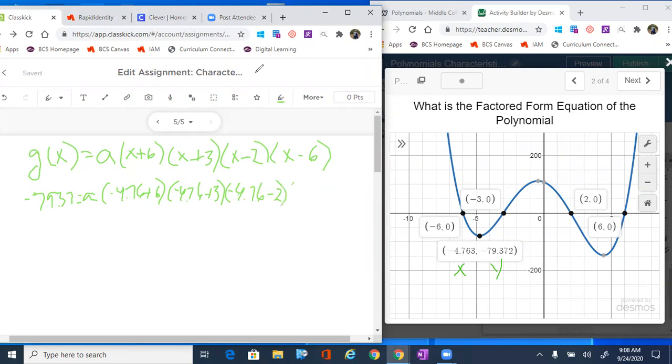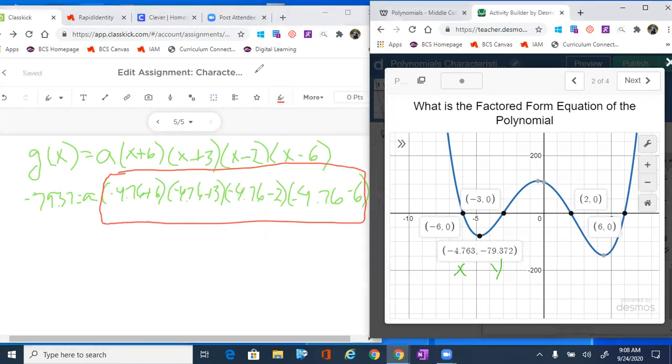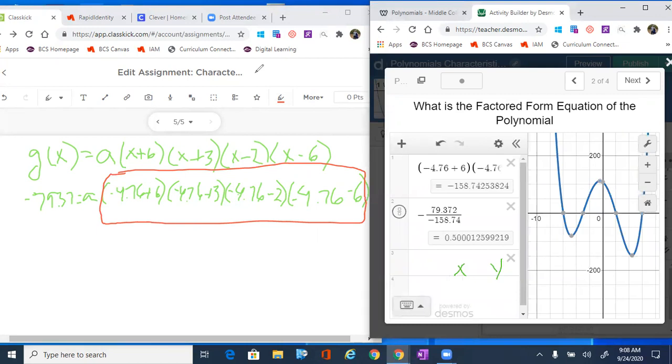Notice it's going in every single one of them: negative 4.76 minus six. For ease, I've gone ahead and just typed it in so we can get that answer. It becomes negative 158.74.